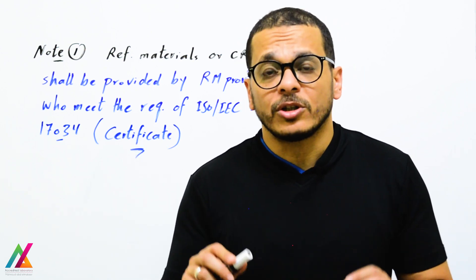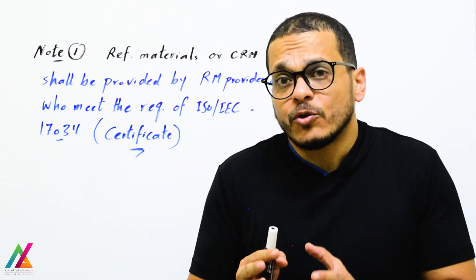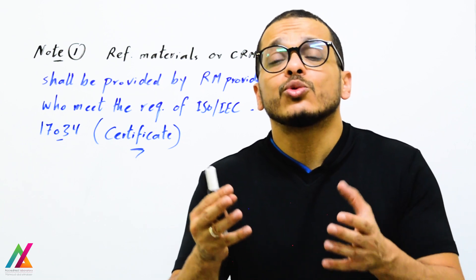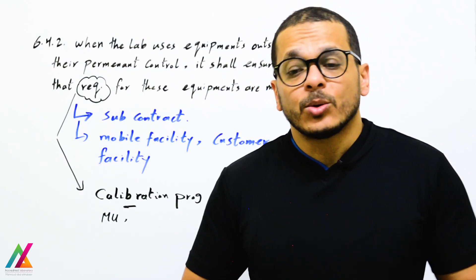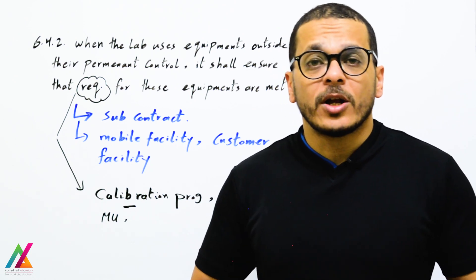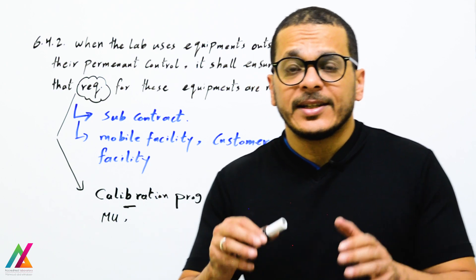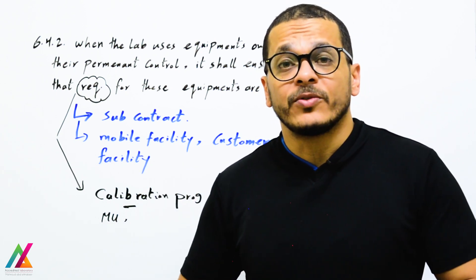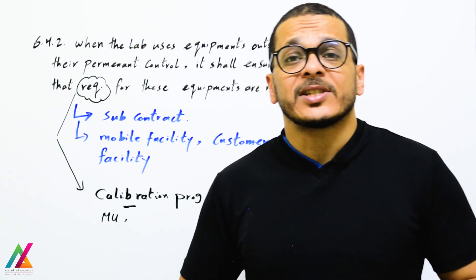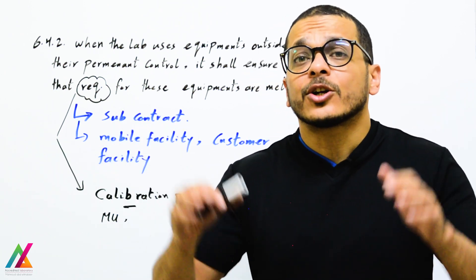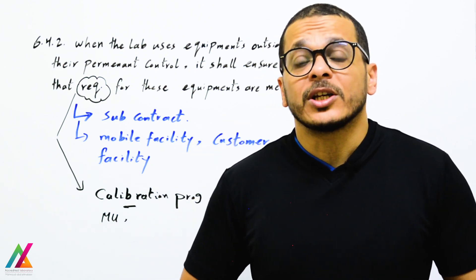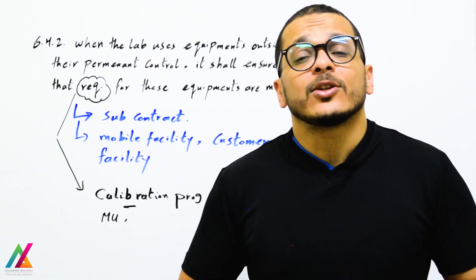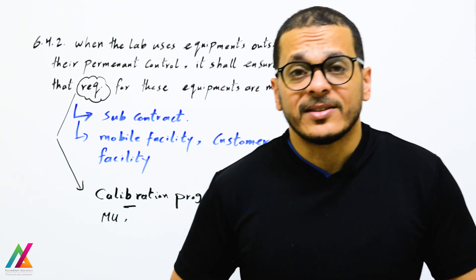PT samples are very important for each lab and each method. For any accredited method, you shall analyze a PT sample every year to ensure competency. When the lab uses equipment outside their permanent control — such as subcontracted labs, mobile facilities, or customer facilities — the lab shall ensure all requirements for those equipment are met in accordance with ISO IEC 17025 2017 edition and other applicable guidelines.